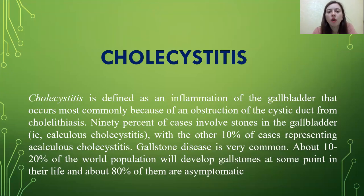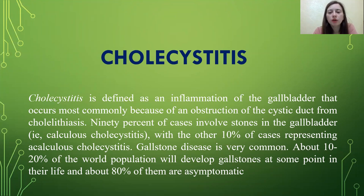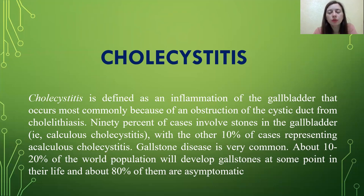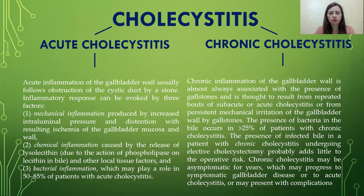Cholecystitis is defined as inflammation of the gallbladder that occurs most commonly because of an obstruction of the cystic duct from cholelithiasis. Ninety percent of cases involve stones in the gallbladder, with the other 10% representing acalculous cholecystitis. Gallstone disease is very common — about 10–20% of the world population will develop gallstones at some point in their life, and about 80% of them are asymptomatic. Cholecystitis may be acute or chronic.